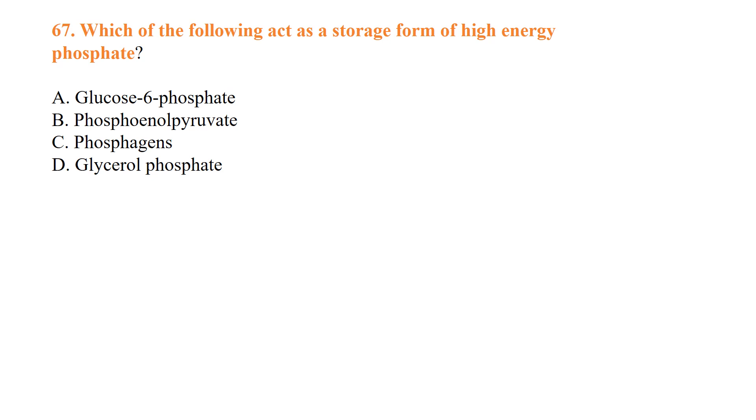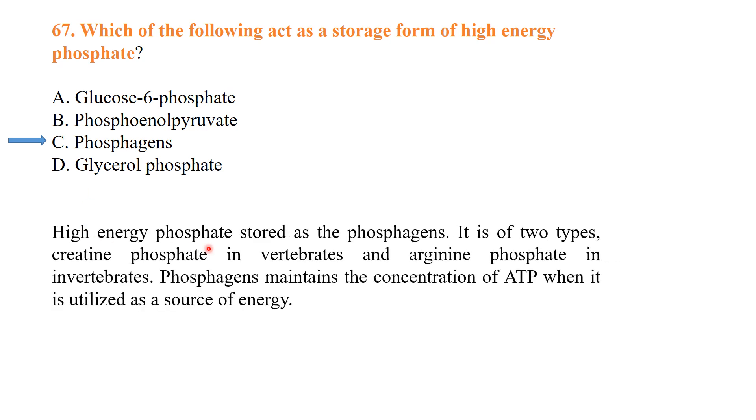Which of the following acts as a storage form of high energy phosphate? The high energy phosphate is stored as phosphagens. Phosphagens are of two types: creatine phosphate in vertebrates and arginine phosphate in invertebrates. Phosphagens maintain the concentration of ATP when it is utilized as a source of energy.